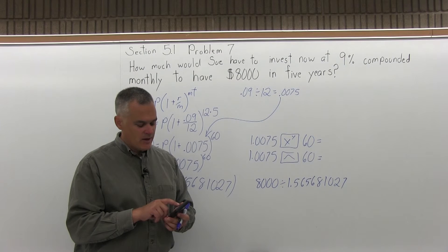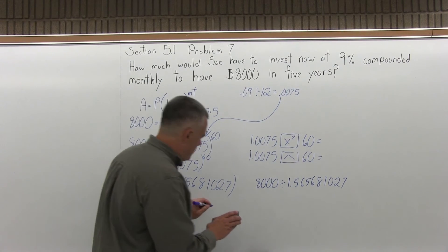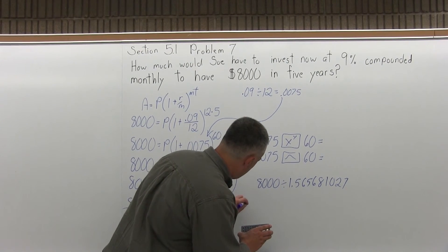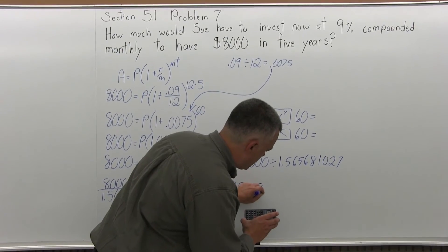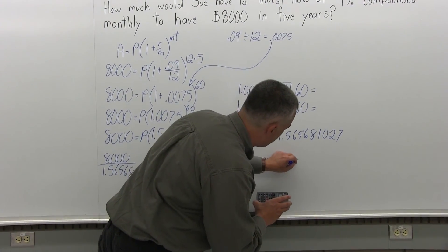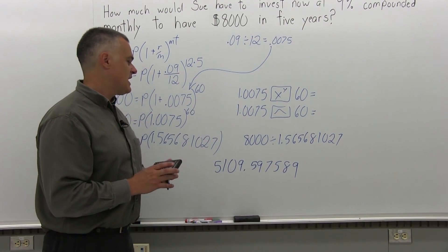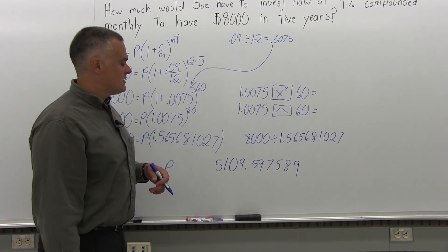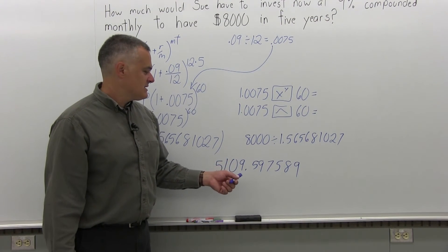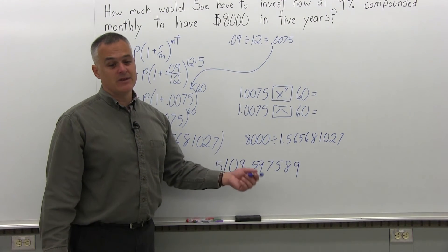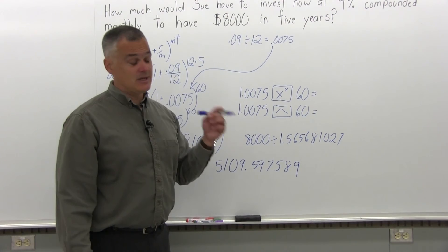So 8,000 divided by recall memory gives me 5109.597589. That's the final answer. That's how much Sue has to invest now at the 9% compounded monthly to have the $8,000. Now, since money is measured down to how many cents, I don't want to have six places after the decimal. It's totally unnecessary. I want to go to two places after the decimal to tell me how many pennies.